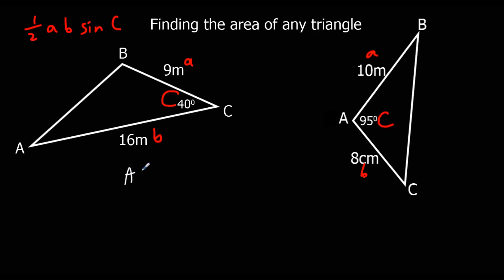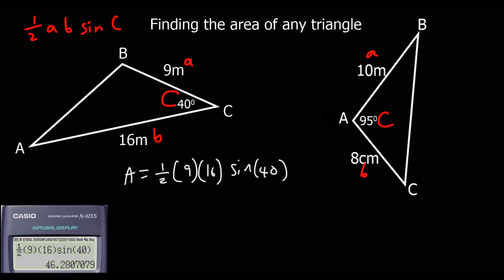And we'll say area equals half times a, b, sin C. We type it into the calculator and we get our answer out of 46.3 meters squared to three significant figures.